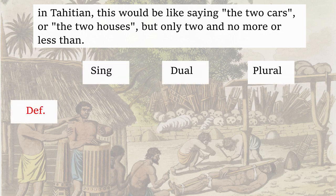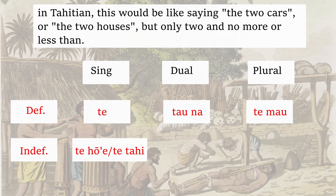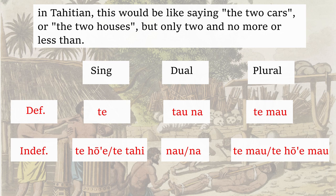The singular definite article is 'te' as mentioned before. The dual form of this is 'to na,' and the plural form is 'te mao,' which would be like 'the three men' or 'the countries.' In the indefinite singular, you say 'te hoe' or 'te tahi,' which is like saying 'a car' or 'a house.' Tahitian takes this a step further and does an indefinite dual form and an indefinite plural form, which would be like saying 'a two houses' or 'some houses.'